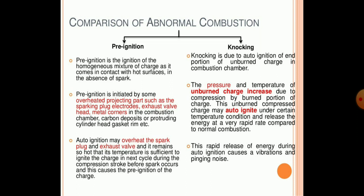By comparing normal combustion and abnormal combustion, the two phenomena of ignition we must consider are pre-ignition and knocking. Pre-ignition is the ignition of the homogeneous mixture of charges as it comes in contact with a hot surface in the absence of a spark. It is initiated by some overheated projecting parts such as sparking plugs, electrodes, exhaust valves, and metal corners of the combustion chamber. Carbon gets deposited on the cylinder head, gasket, and rim. Auto-ignition may overheat the spark plug and exhaust valve, remaining so hot that it ignites the charge in the next cycle during the compression stroke before the spark occurs, causing pre-ignition.